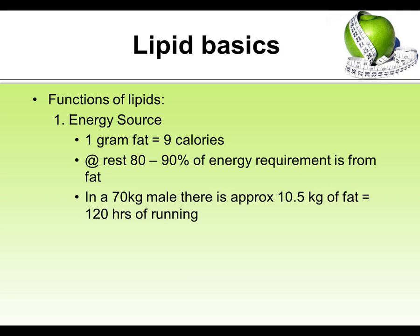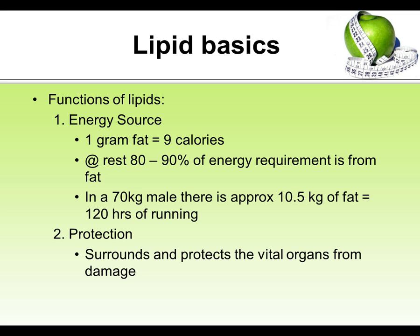To put it in real terms, a 70 kilogram male would have approximately 10 and a half kilograms of body weight in the form of fat — equivalent to about 120 hours of running. Our second function is protection: much like muscle can protect internal vital organs, fat can do the same, giving another layer of protection to areas of the body that don't have a hard skeletal structure.